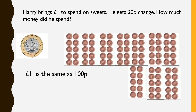Harry brings £1 to spend on sweets. He gets 20p change. How much did he spend? On screen I've got a picture of a £1 coin and some pennies. This is to represent that there are 100 pennies in £1, which is going to make it a little bit easier for us to understand what we need to do next.